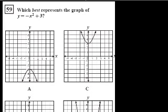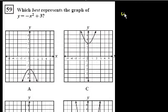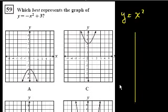Problem 59. They're asking which best represents the graph of y equals minus x squared plus 3. Just to get an intuition of what parabolas look like — because these are all parabolas, or the graph of a quadratic equation — if I had the graph of y equals x squared, what does that look like? Let me just draw a quick x and y axis. If I were to draw y equals x squared, it looks something like this.